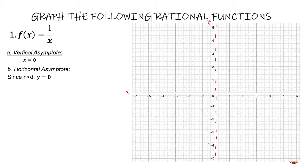To get the horizontal asymptote, we have to look at the degree of the numerator and the denominator. Since 1 has a degree of 0 and x has a degree of 1, and 0 is less than 1, then the horizontal asymptote is y equals 0. So our horizontal asymptote is also along the origin.